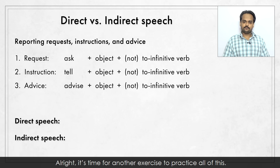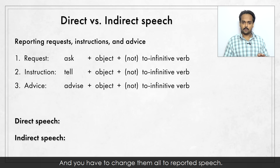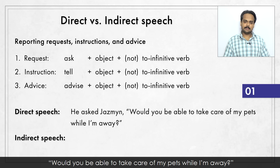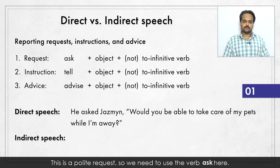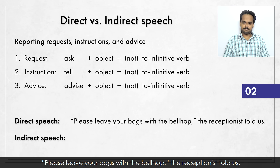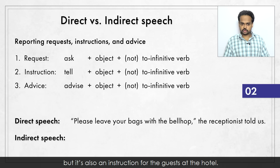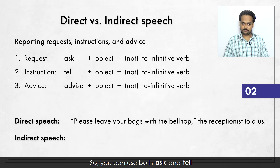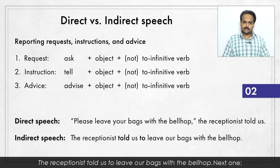It's time for another exercise. I have six sentences for you – some are requests, others are instructions or commands, and some express advice. Here's the first one: He asked Jasmine, "Would you be able to take care of my pets while I'm away?" This is a polite request, so we need to use the verb "ask": he asked Jasmine to take care of his pets while he was away. Number two: "Please leave your bags with the bellhop," the receptionist told us. This is both a polite request and an instruction, so you can use both "ask" and "tell". I'm going to use "tell": the receptionist told us to leave our bags with the bellhop.